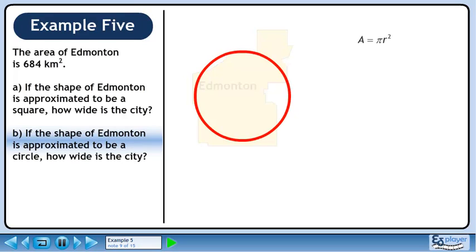The formula for the area of a circle is A equals pi r squared. Plug in 684 for the area of the circle.